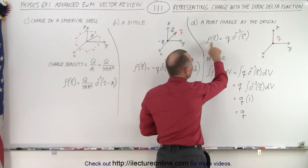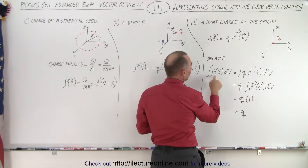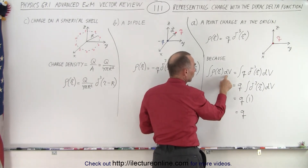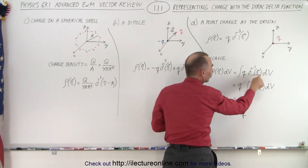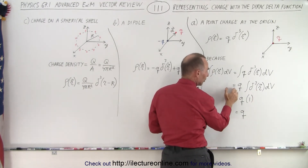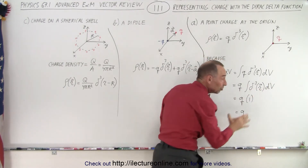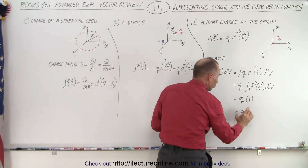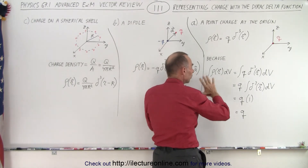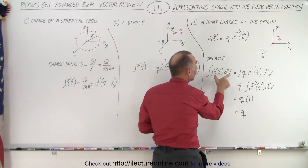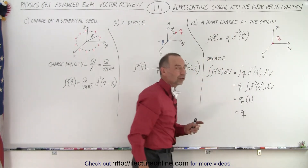So the charge density is equal to the charge Q times the Dirac delta function in three dimensions. If we take the function as a function of r and multiply it times dV, we can write this as Q times the Dirac delta function dV. We take Q out of the integral because it's a constant, so now we have the integral over all of space of the Dirac delta function dV, which by definition equals one, giving us Q times one, or simply Q. Integrating the charge density over all of space gives us the total charge, confirming this is the correct representation of the charge density of a point charge at the origin.